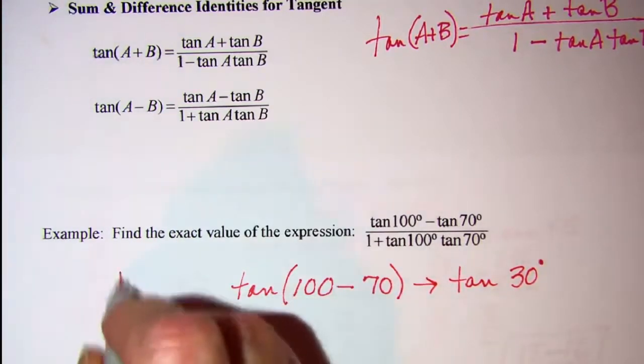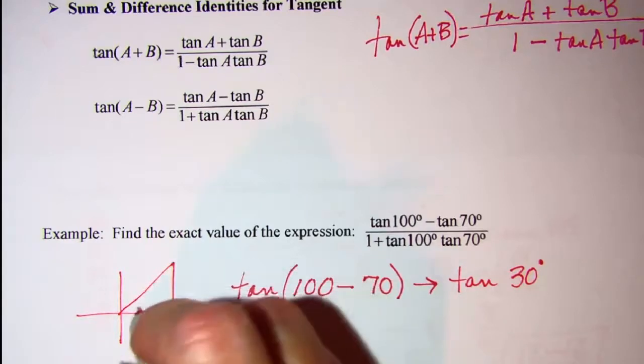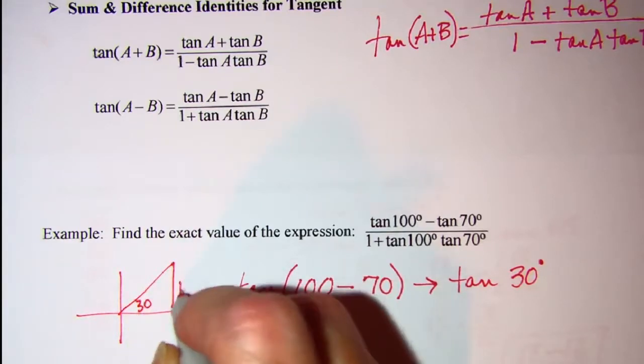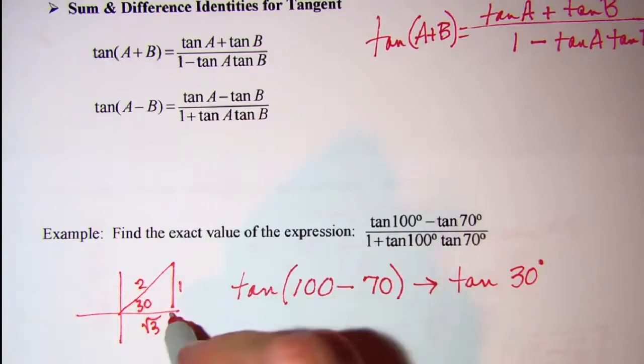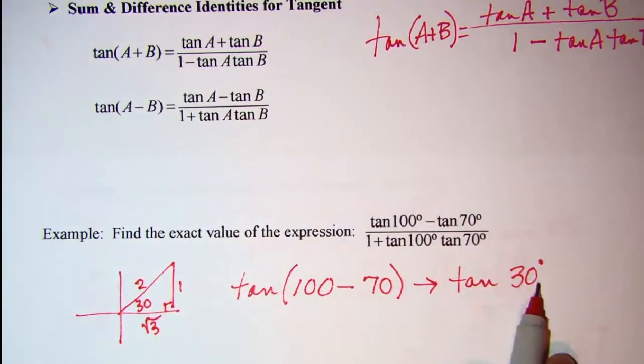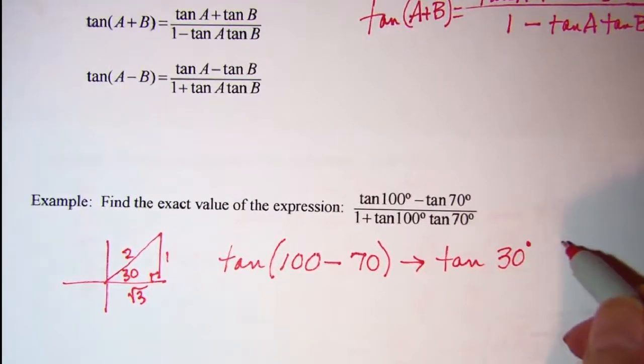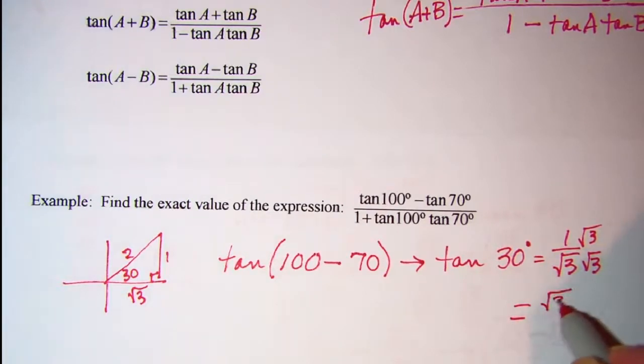So we can do our reference triangle real quick on that. Here's our 30, so we need a 1 and a root 3 on the adjacent side and 2 on the hypotenuse. So tangent of 30 is opposite over adjacent, so this is 1 over root 3, or if we rationalize the denominator we get root 3 over 3.